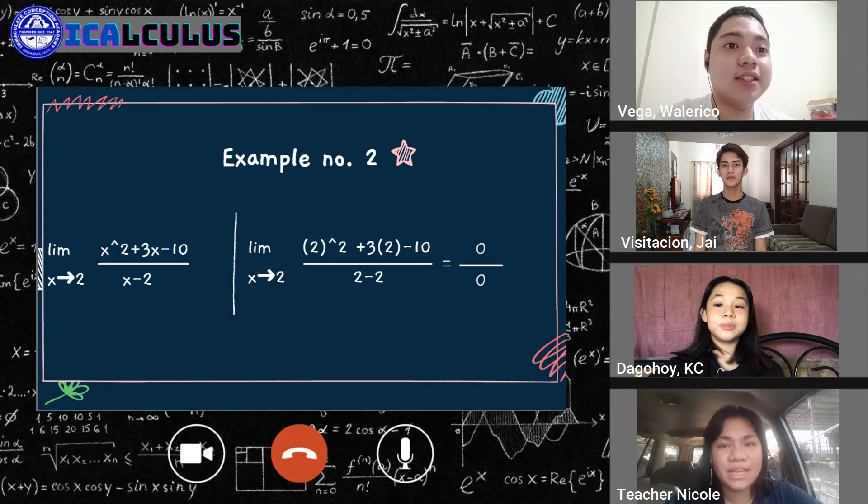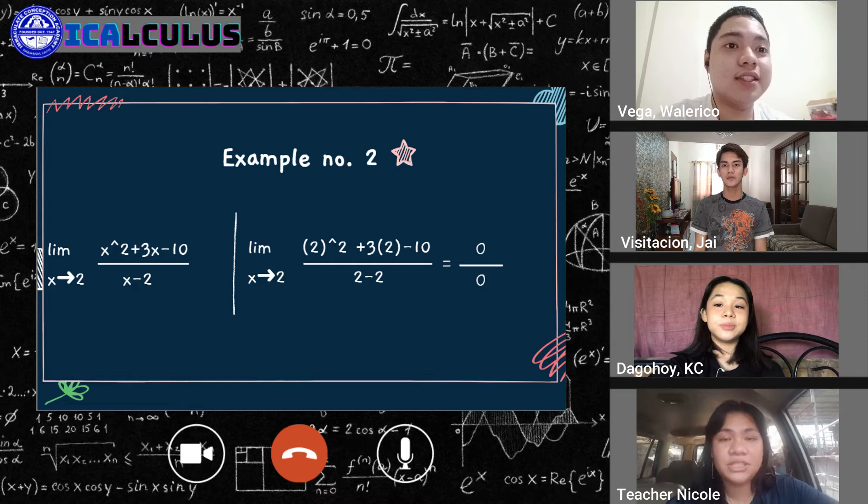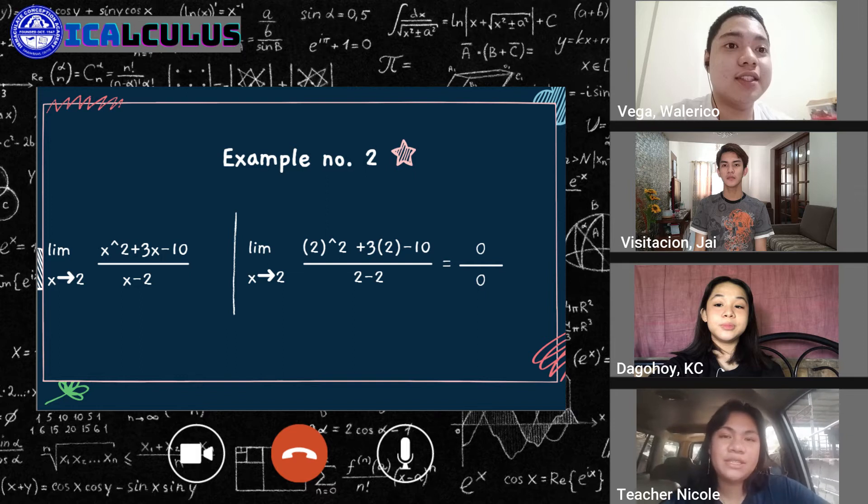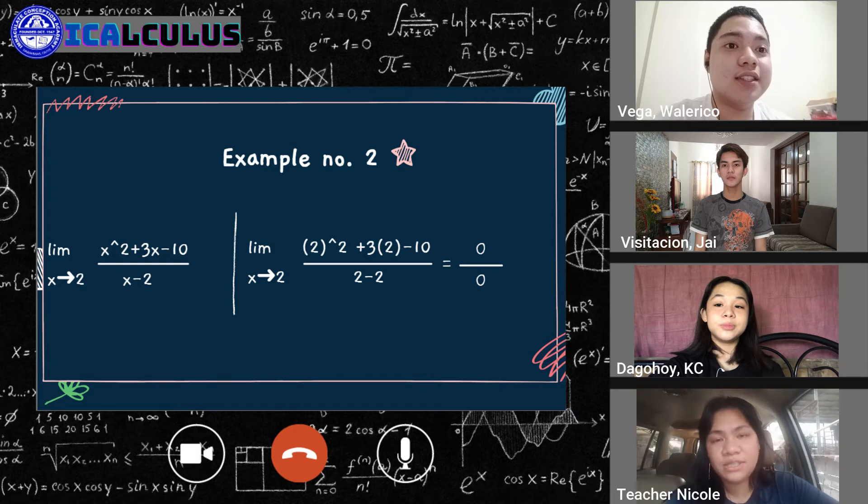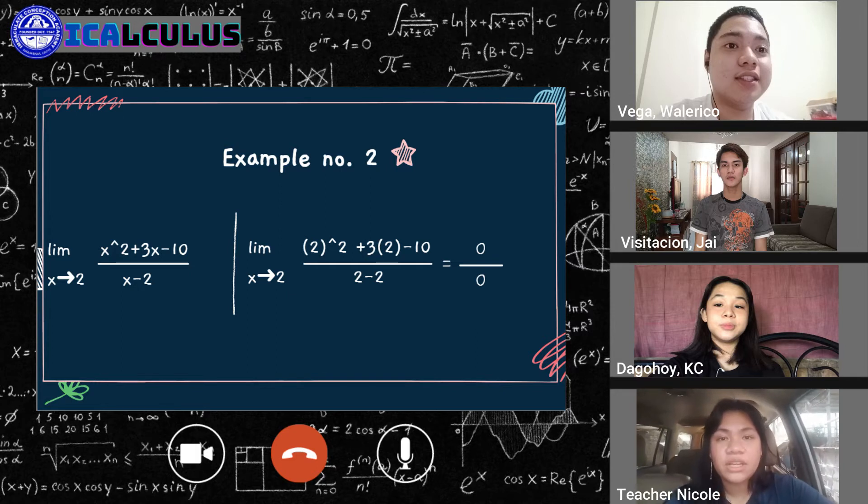So I hope you got the first example. If you do not, of course, I have prepared the second one, as I usually do in my videos. So for our second example, we have the limits of x squared plus 3x minus 10 all over x minus 2 as x approaches 2. Again, you will notice that when you directly substitute the constant value, which is 2, to our given function, it will give us an indeterminate number of 0 over 0.